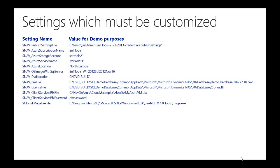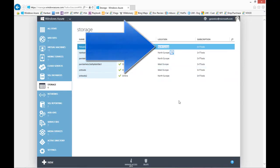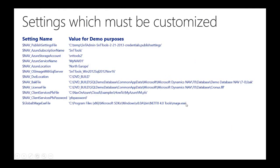The next setting is NAV Azure location. Specify the same location you used when you created your storage account. The next setting is NAV OS image with SQL Server. This should be set to the image name for an operating system image which includes SQL Server.